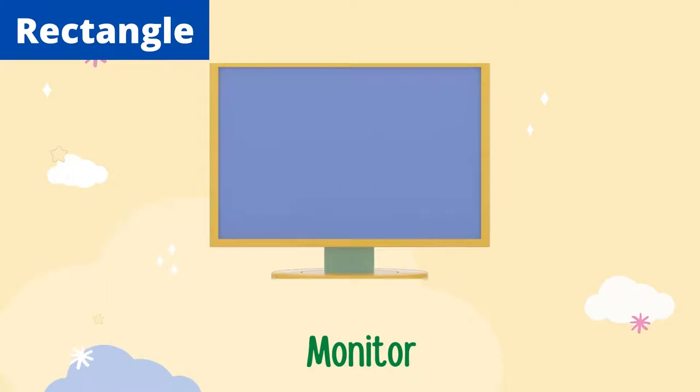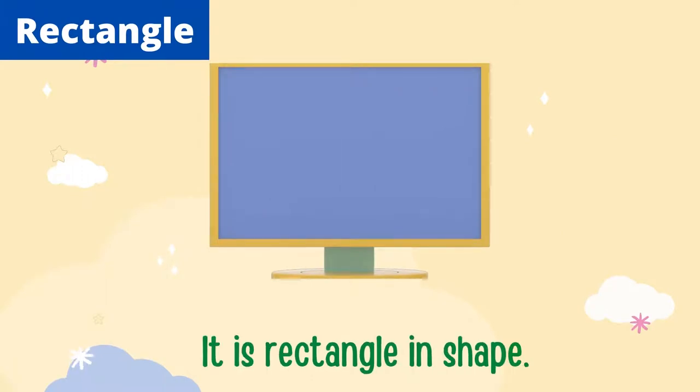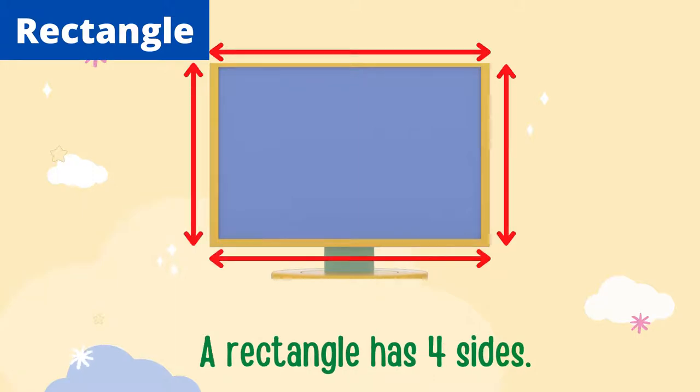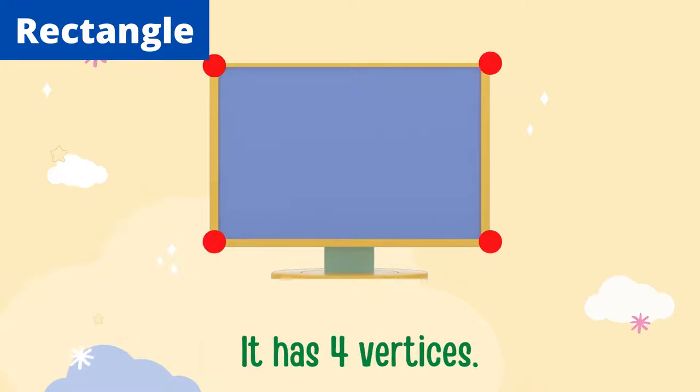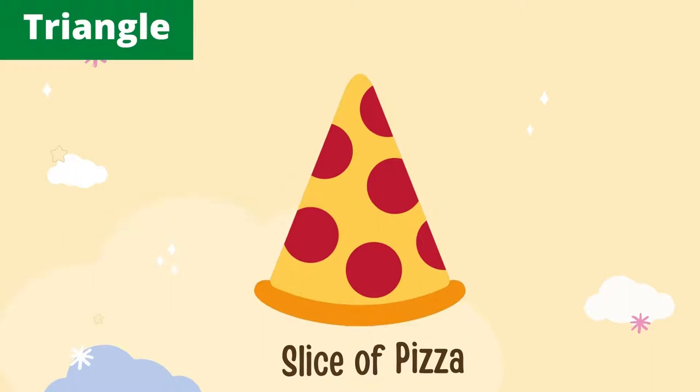What can you see? It's a monitor. It is rectangle in shape. A rectangle has four sides, and its opposite sides are equal. It has four vertices. You can see a slice of pizza.